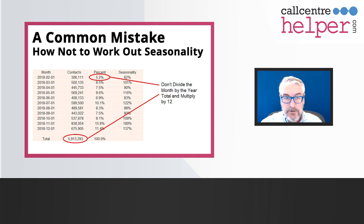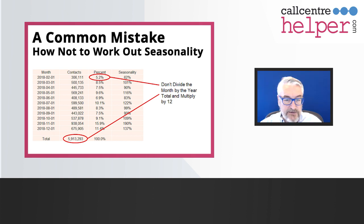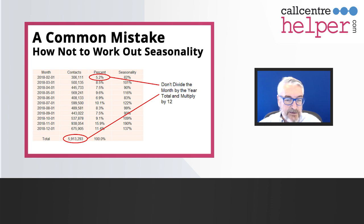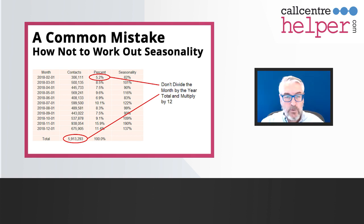One of the common mistakes people make when working out seasonality is to simply look at 12 months worth of data. What they do is take a whole load of contacts from the data — this is made-up data — where you've got a lower number of contacts in January and higher in December. You add all of that together to get the annual contact volume, work that out as 100%, and then calculate each month as a percentage. Taking one twelfth as the average, you work out a seasonality — so you get values like 62%, 132%, and so on.